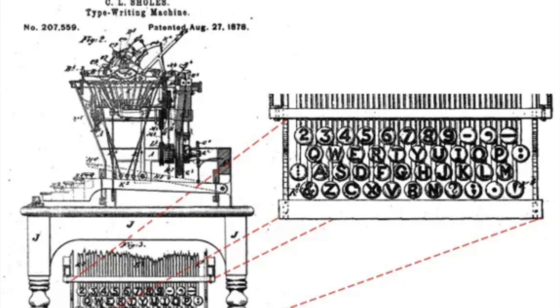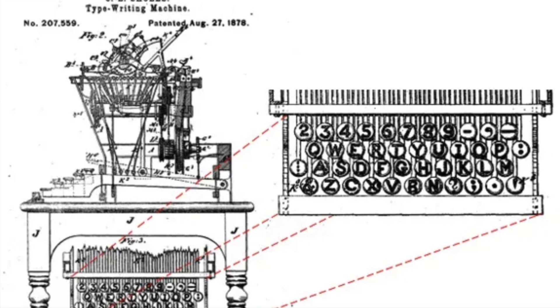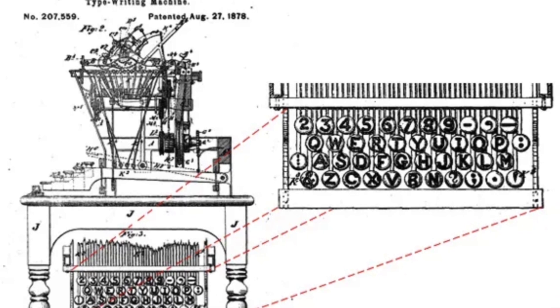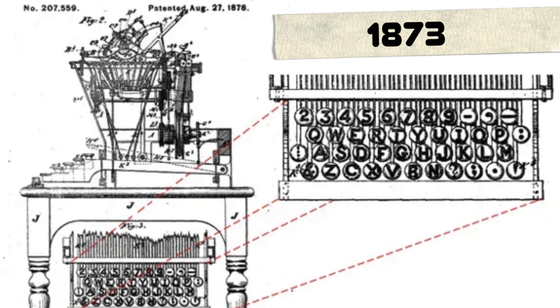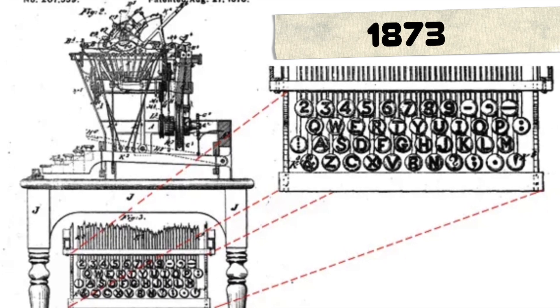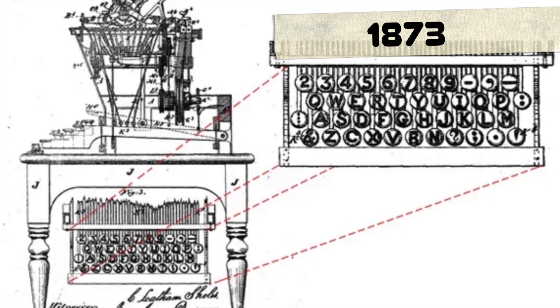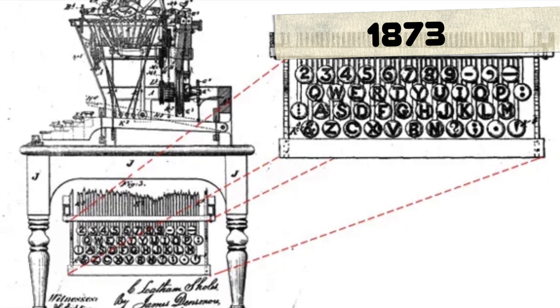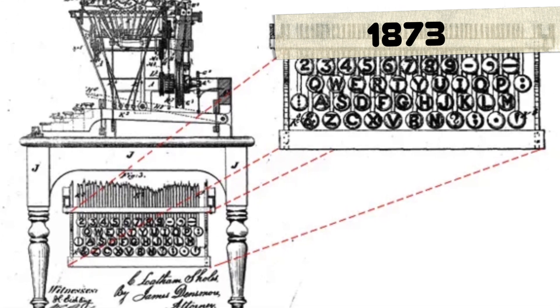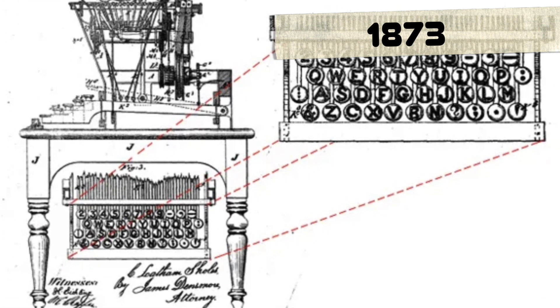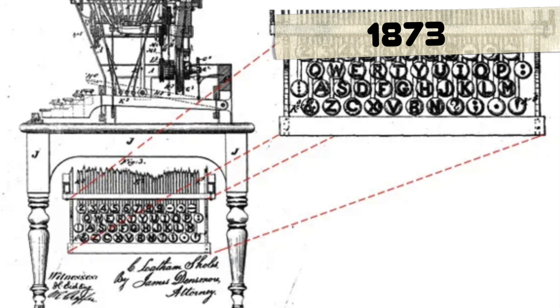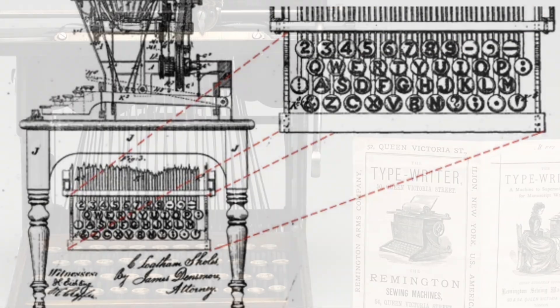The QWERTY layout, which Scholes patented in 1873, was thus born out of necessity rather than optimal design. The name QWERTY comes from the first six letters in the top row of the keyboard.